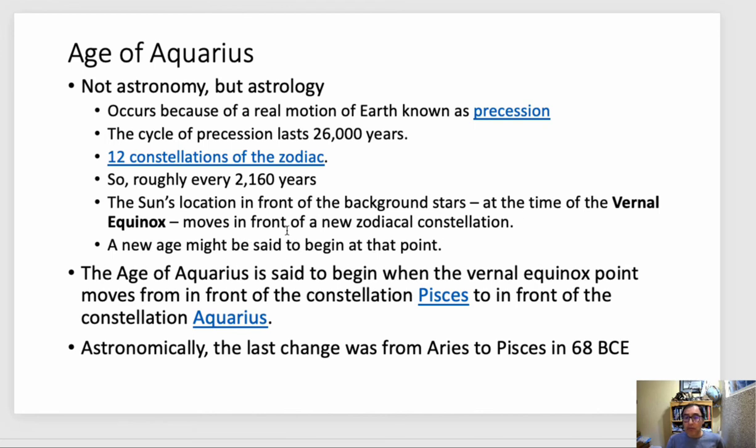So it'll move in front of a new Zodiac constellation. So in astrology, there's like a new age. It's said to begin when the vernal equinox point moves from the constellation of Pisces to in front of the constellation of Aquarius. And so astronomically, there was an astronomer in Belgium who figured this out. And he figured out that the change from Aries to Pisces was 68 before Common Era. So about a little over 2,000 years ago. And so the question is, when will this age of Aquarius be?